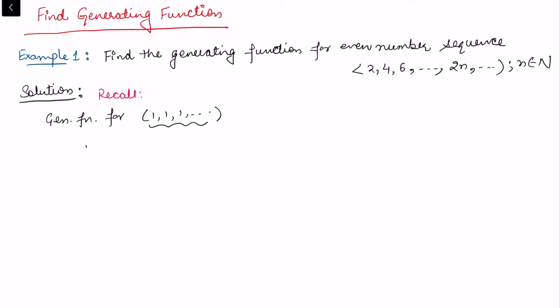The constant term is 1, then 1 times x to the power 1, then 1 times x squared, and continuing like this, this is simply 1 + x + x² + ...